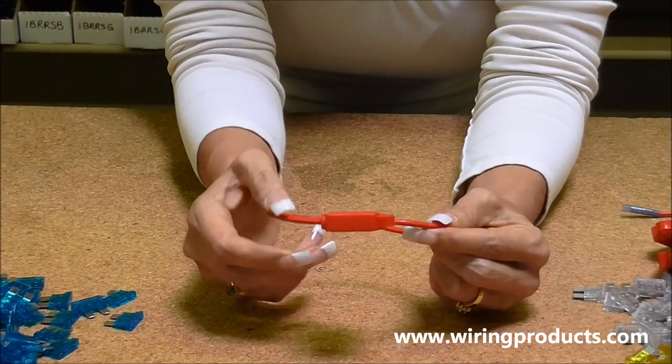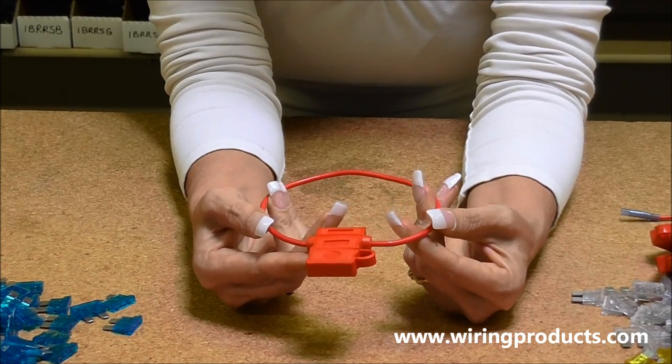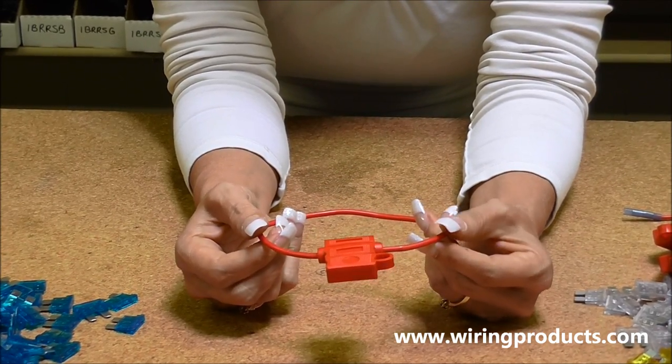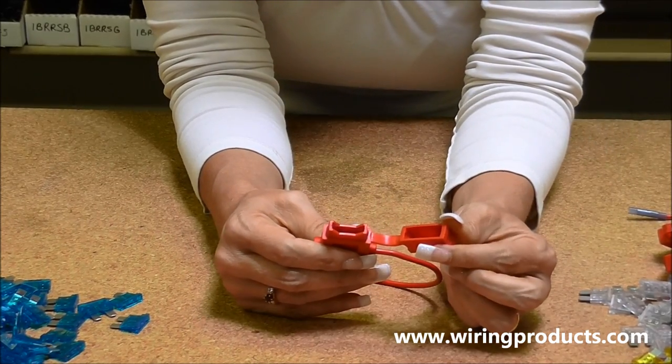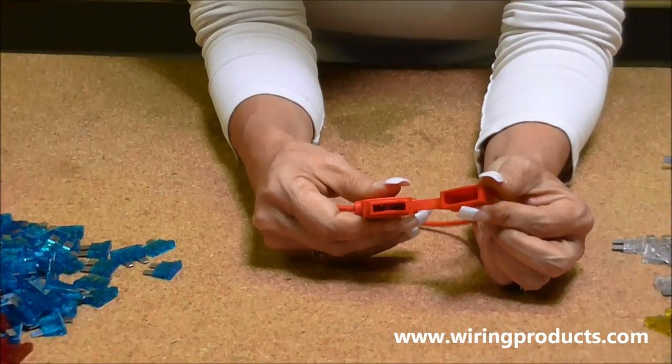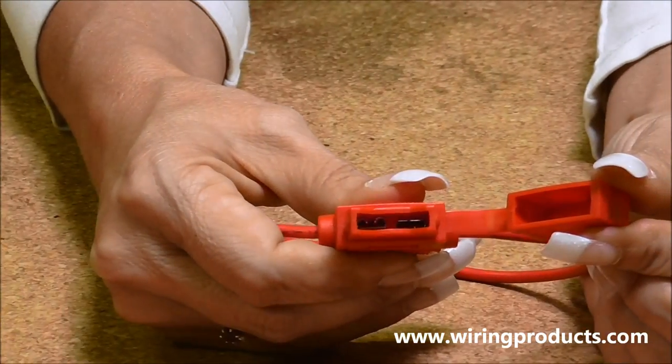This one has 16 gauge wire and it's looped so you make the cut where you need to make it. And it comes with a cap to keep the weather and dirt and dust and everything else out of it.